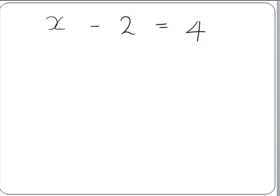x minus 2 equals 4 is called an equation. It is called an equation because it contains an equal sign. The equal sign tells us that the left hand side and the right hand side are equal or the same.